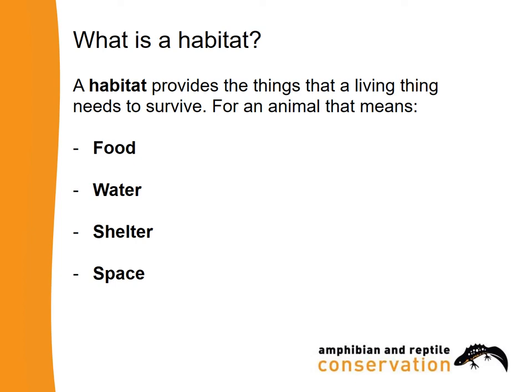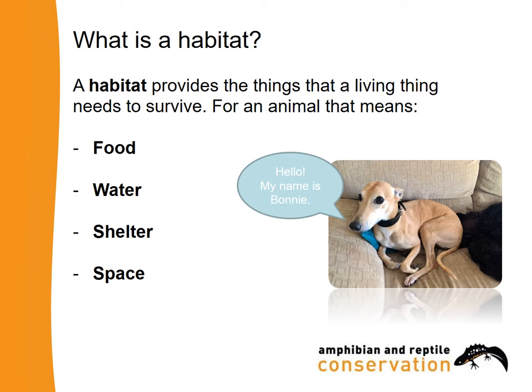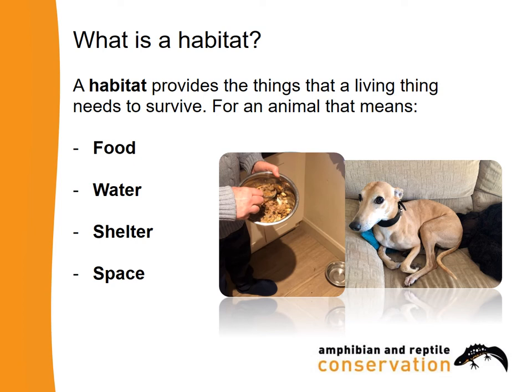What we're going to do now is think about an example using pets. Think about a pet cat or a pet dog. These live in our homes, and you can think of our homes as their habitat. What is provided for them by living with us? Well, an animal, a pet that lives with us, has food — it gets given food in its bowls. It has water as well.